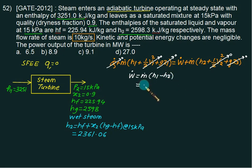ṁ is given as 10, h1 is 3251, minus h2 is 2361.06. This answer will be kg per second times kJ/kg, which directly comes in kilowatts, and then you can write this answer in megawatts by dividing by 1000. So we have 8.9 MW; choice B is correct.